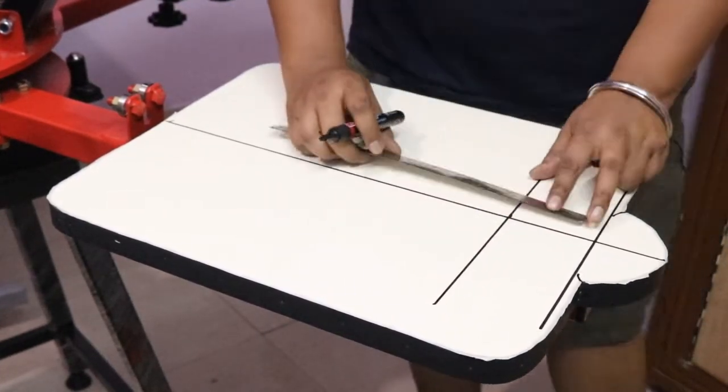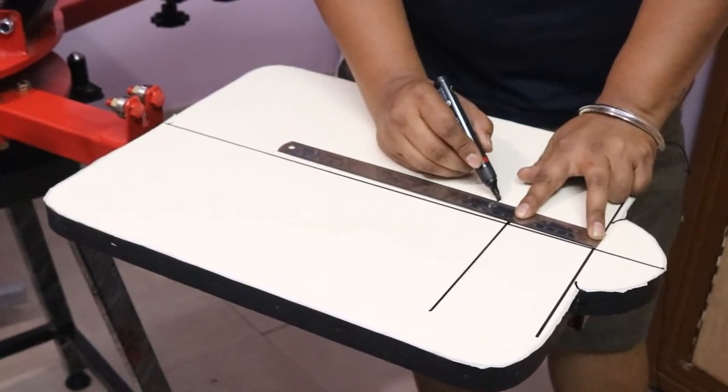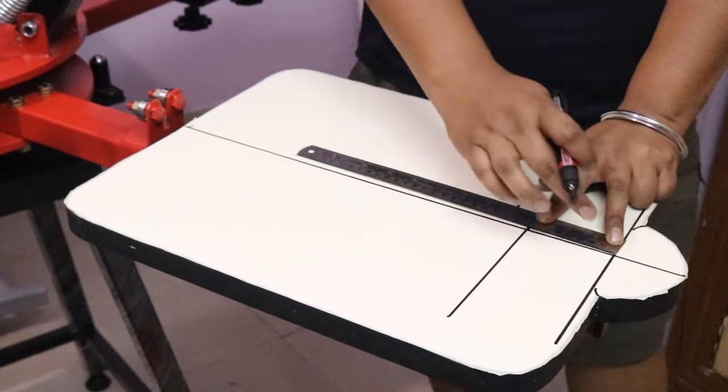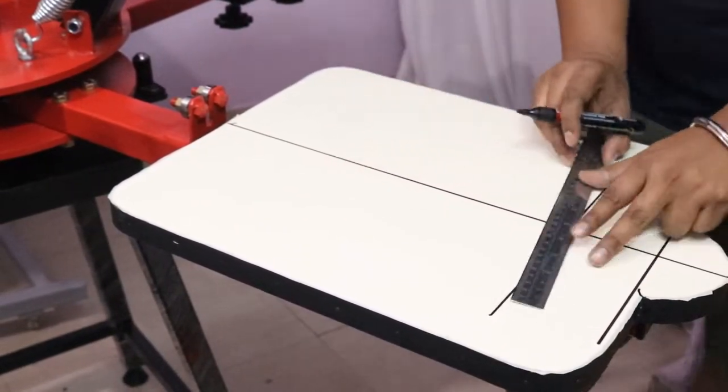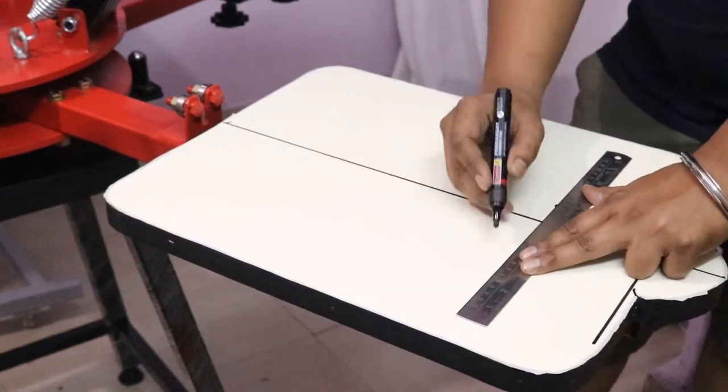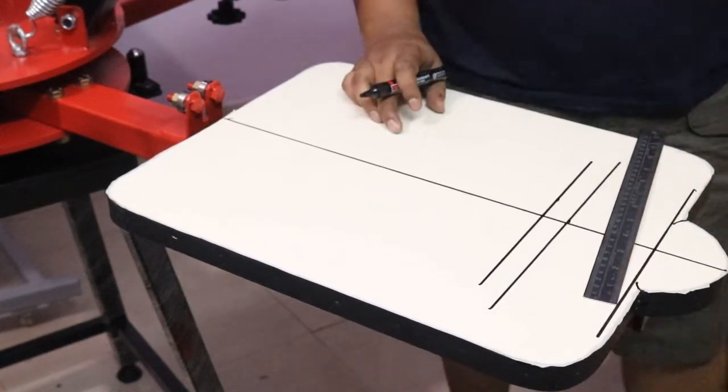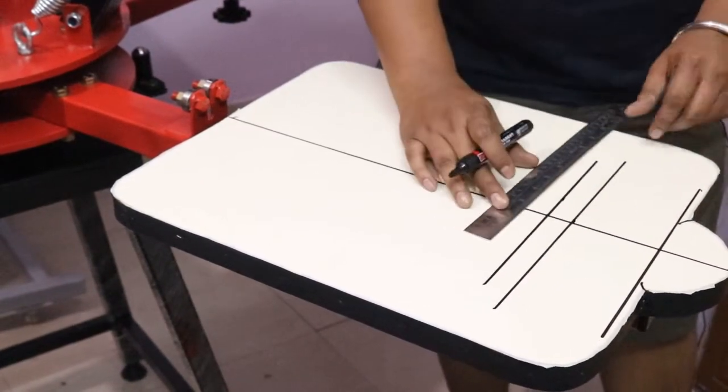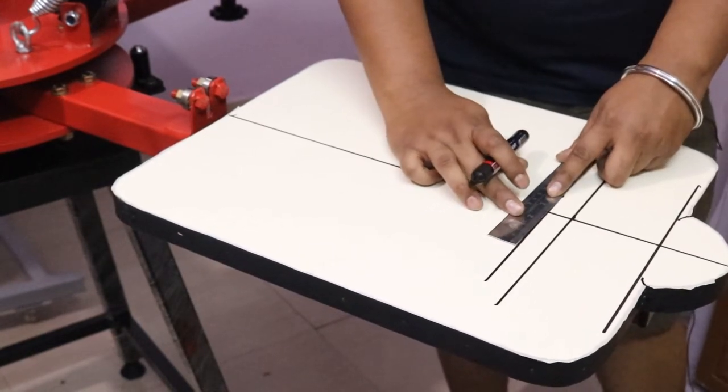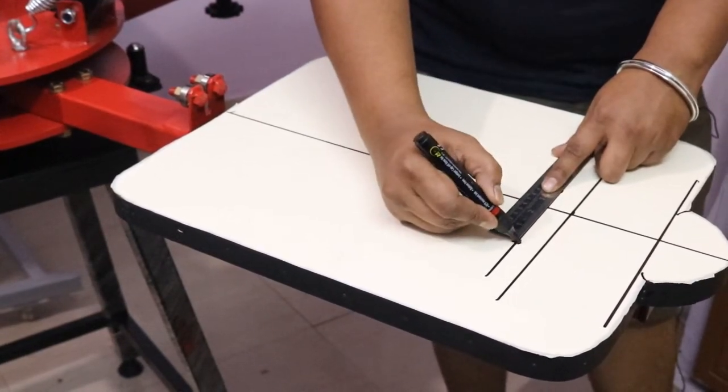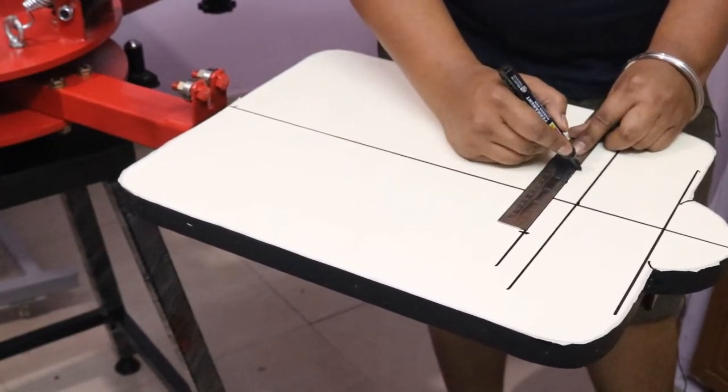And from here we'll take four inches from neck mark and put one more line. Here we'll go for two and a half inches here and two and a half inches here, then we'll put one more straight line.